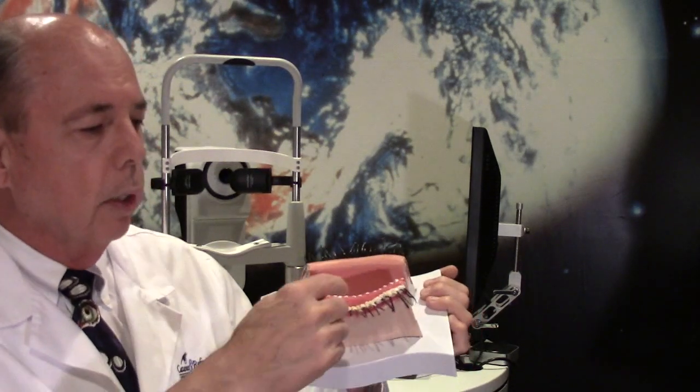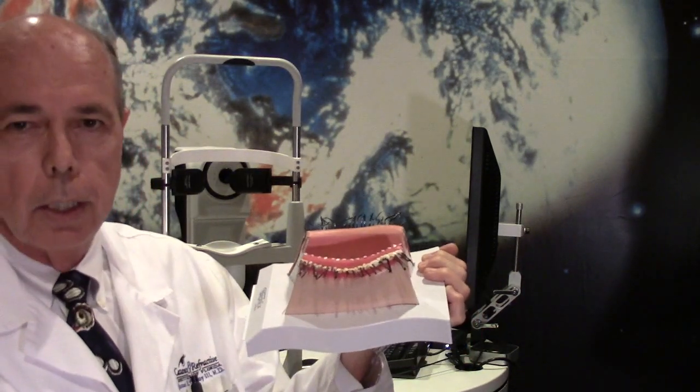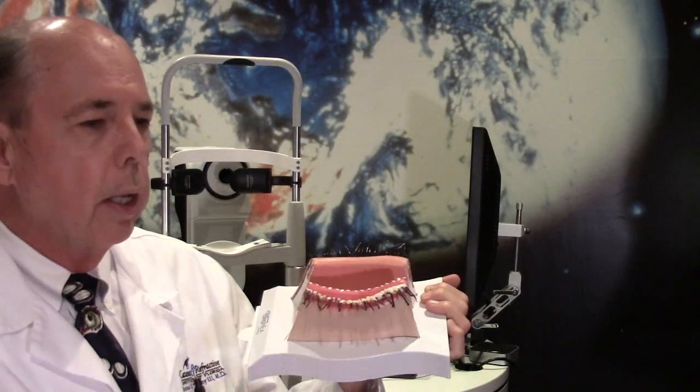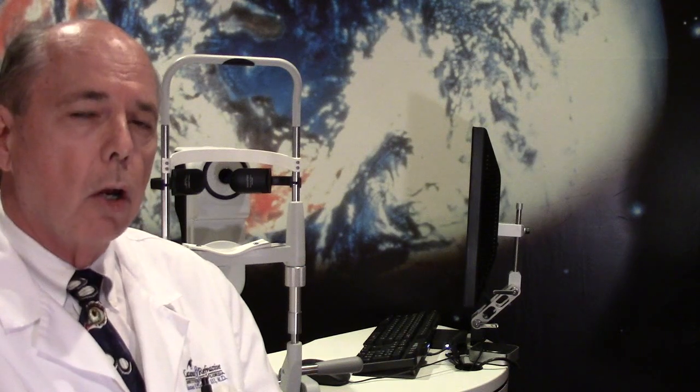And so people who have blepharitis, their lashes get crusted up. Maybe not to this extent, but the lashes start getting crusting on it, and it's due to either a staph bacteria or a combination of rosacea, seborrheic skin condition.